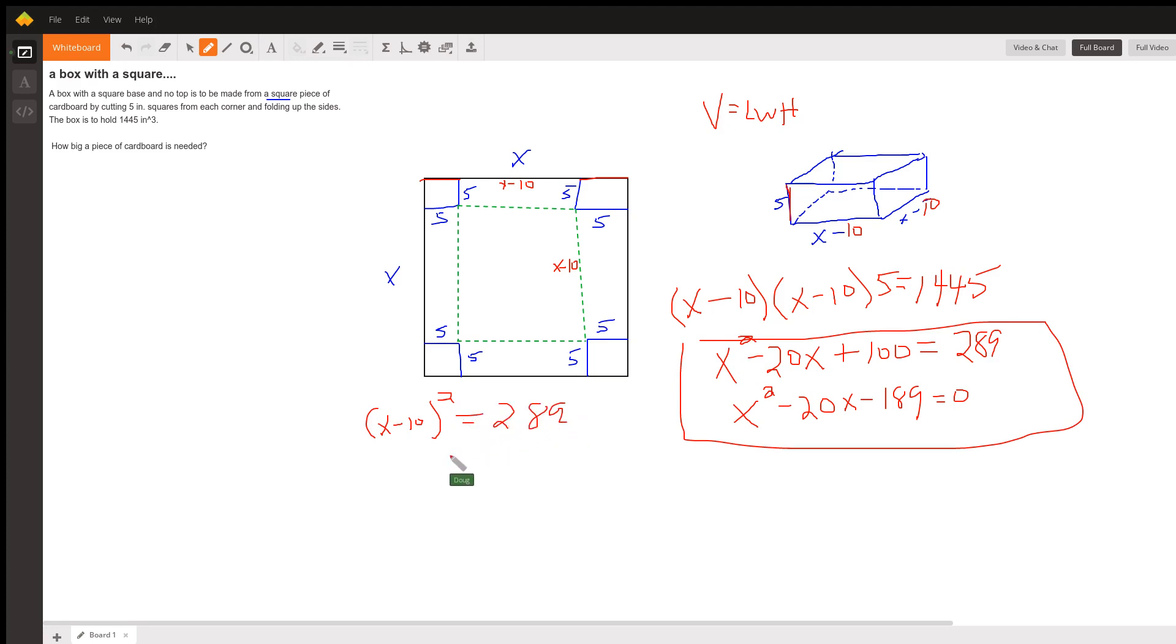Then take the square root of both sides equals plus or minus 17. So X equals 10 plus or minus 17, which tells us that X equals 27 or X equals negative 7.